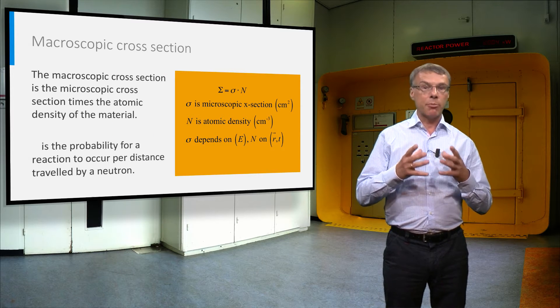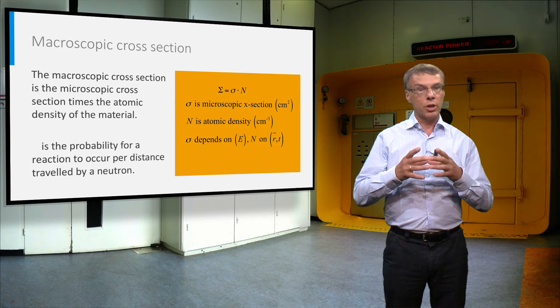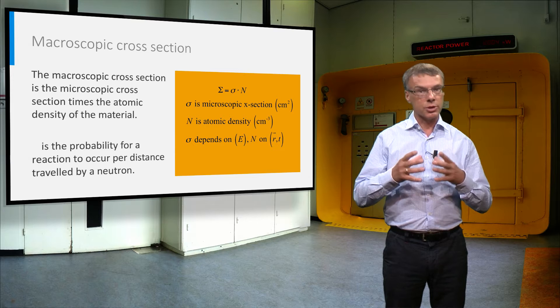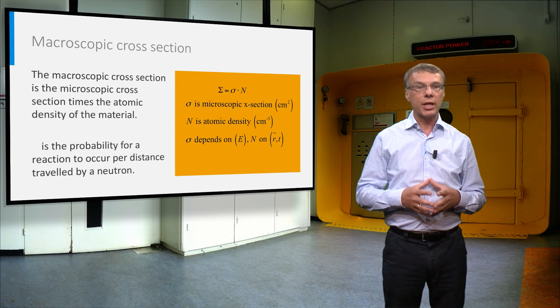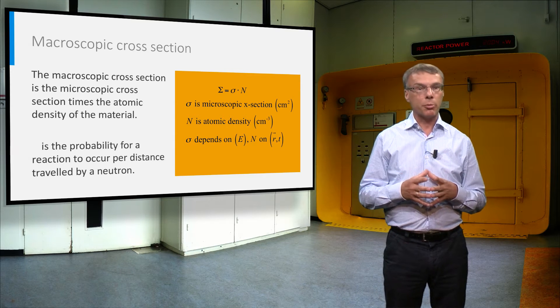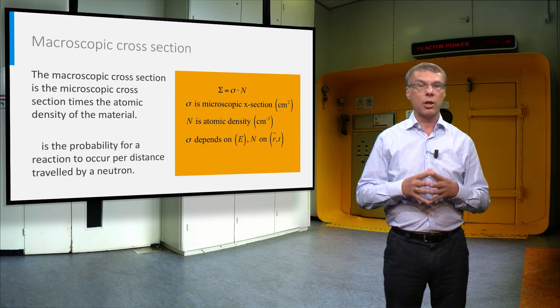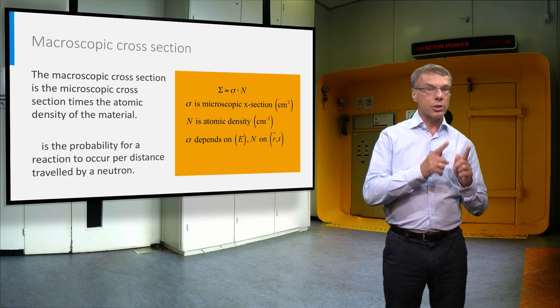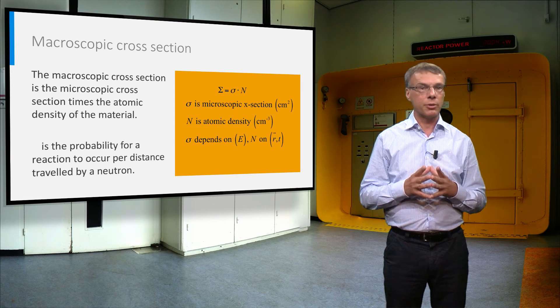Previously we have seen that a microscopic cross section of a nuclide is the effective area of the nuclide for interaction with neutrons. You can easily imagine that the number of reactions of a neutron beam with the atoms in a material will be proportional to this microscopic cross section, but also to the atomic density of the material.